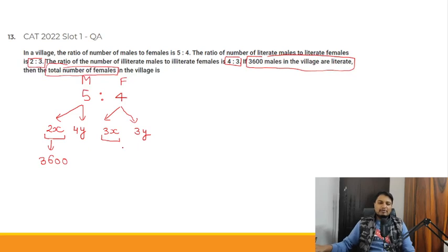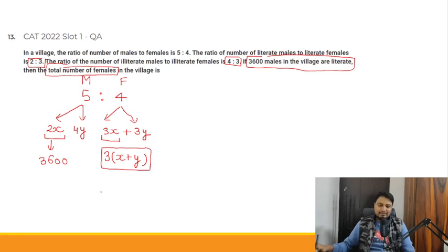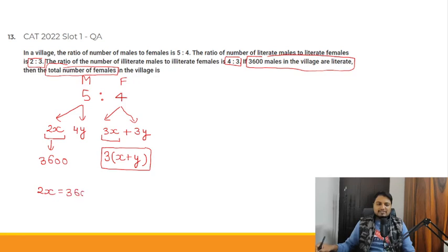Total females in the village = 3x + 3y, which is 3 times (x + y). So we need to find x and y. From 2x = 3600, x = 1800.